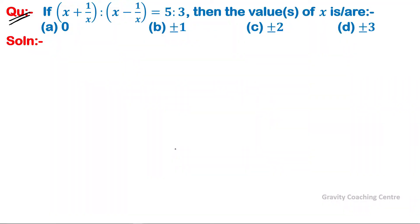Question: if (x + 1/x) : (x - 1/x) = 5:3, then the values of x are...